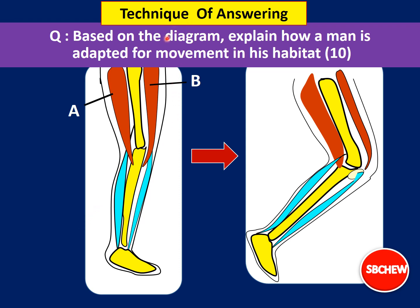Now let us look at a forecast essay question and see how to answer it. The question reads: 'Based on the diagram, explain how a man is adapted for movement in his habitat.' This question asks you to explain how a person is adapted for movement — with the habitat being land, as humans move by walking. Diagram labels A and B identify the two key muscles you need to identify and discuss.